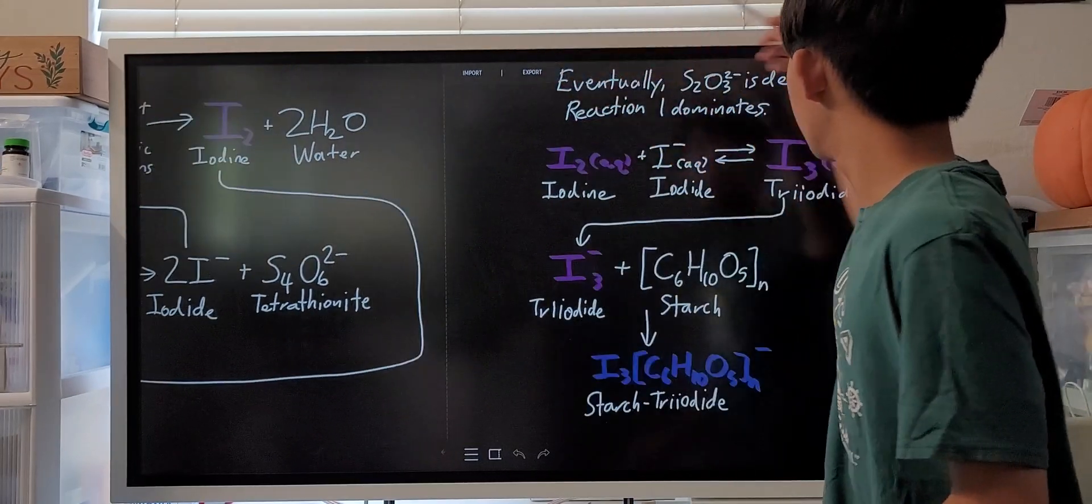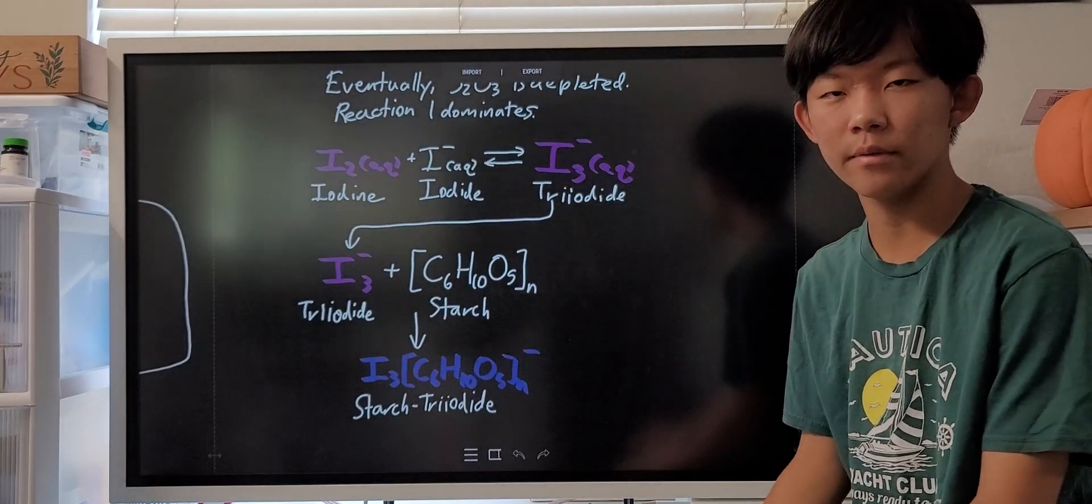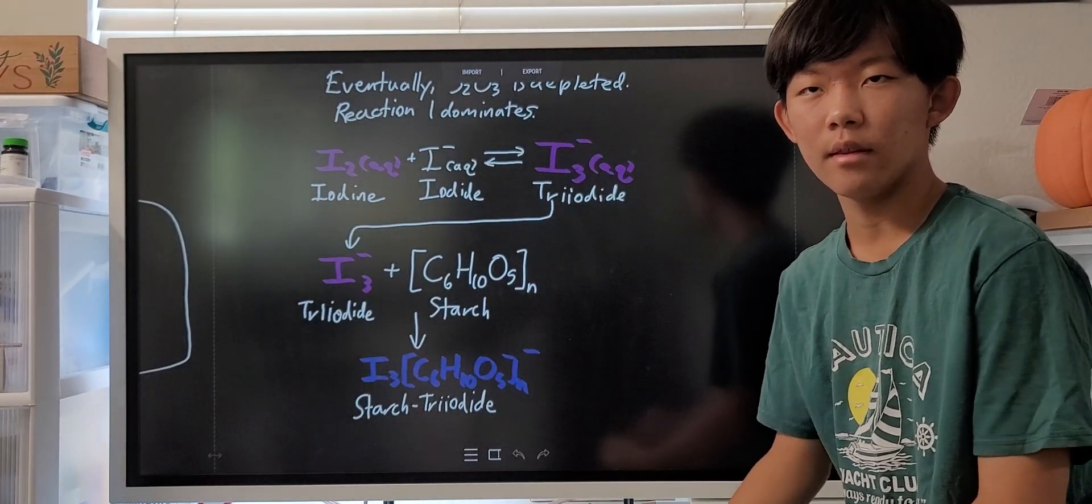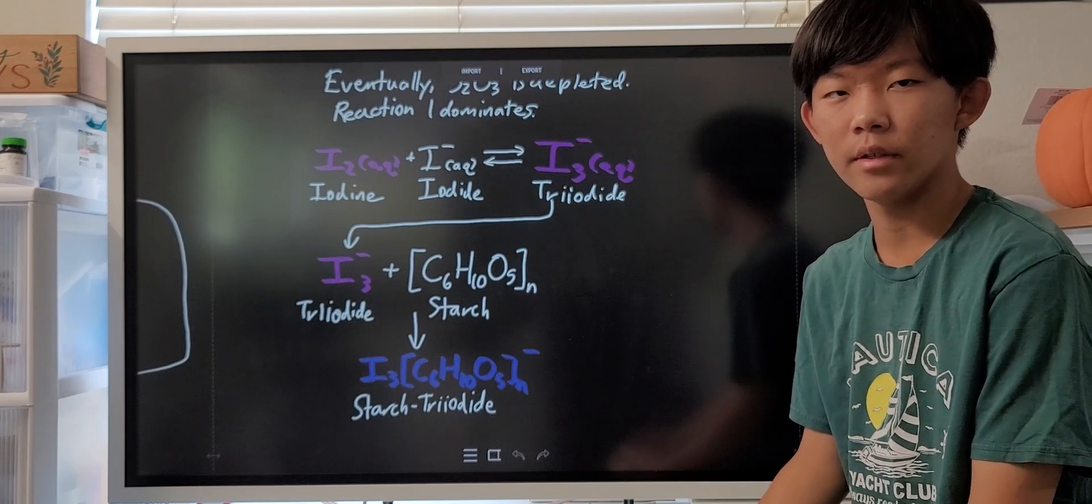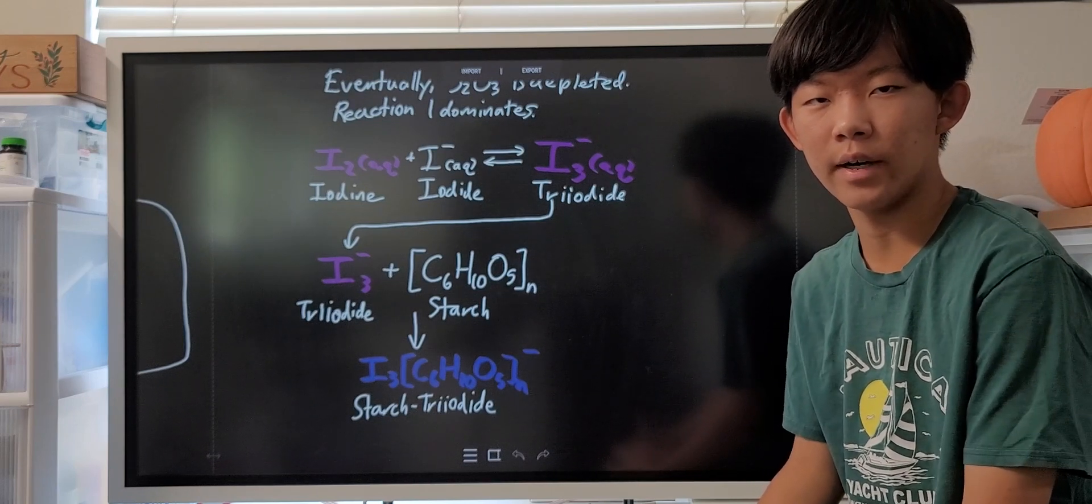However, eventually, all of the thiosulfate ions are depleted from the solution. And now, because of that, iodine can start building up in the solution, since there's no more thiosulfate ions to reduce it.